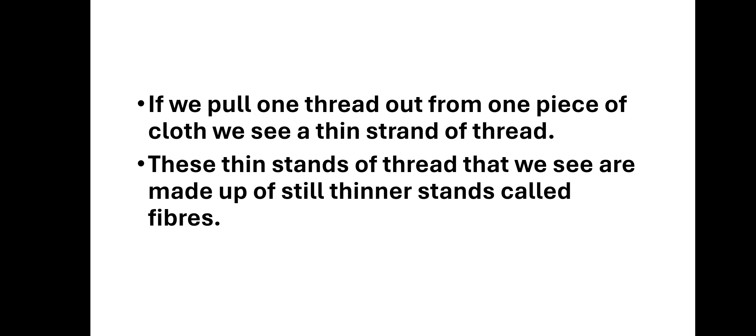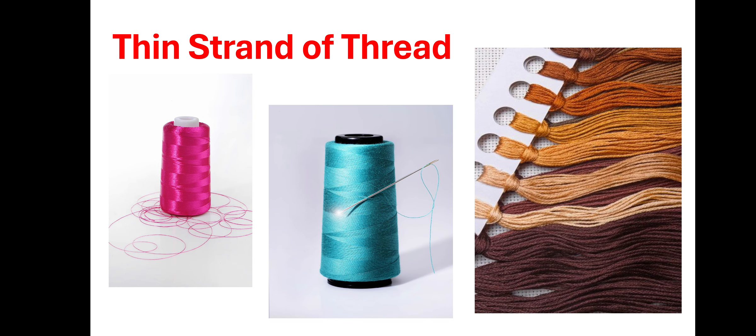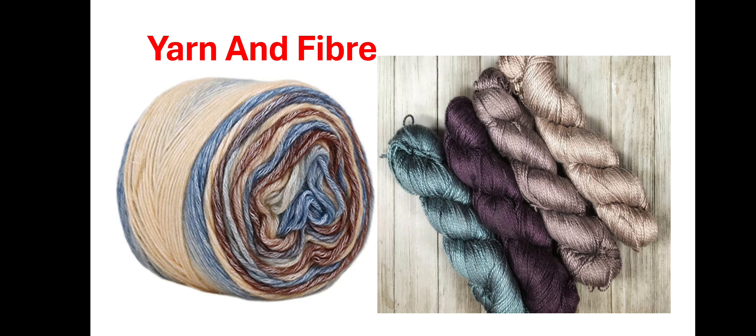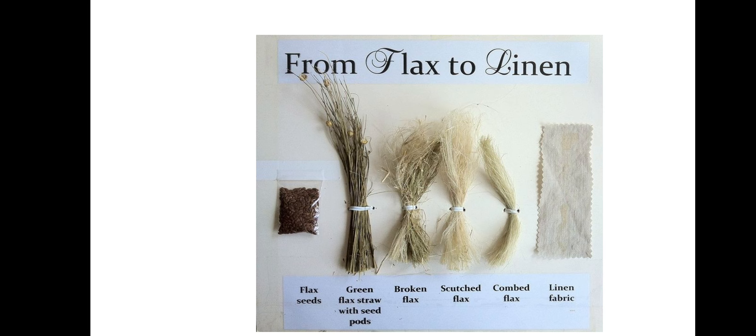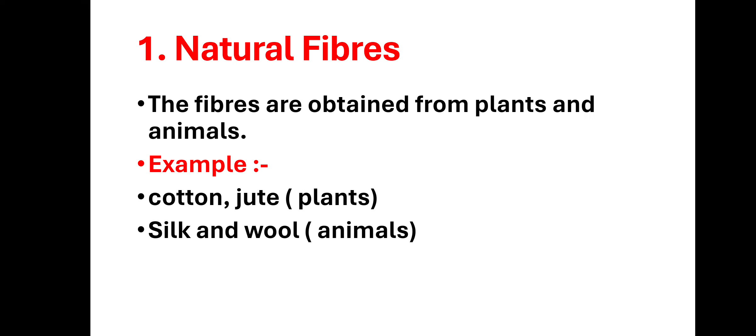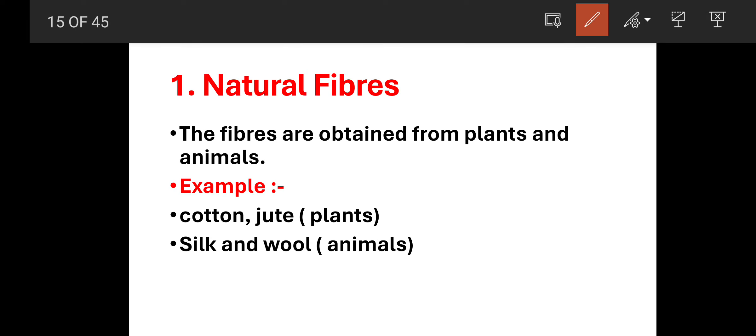So different types of fabrics are made of different types of fibers. If we pull one thread out from a piece of cloth, we can observe the fibers. Fibers are of two types: natural fibers and synthetic fibers. Natural fibers हमें plants से और animals से मिलते हैं, और synthetic fibers हम बहुत सारे materials को use करके बनाते हैं।